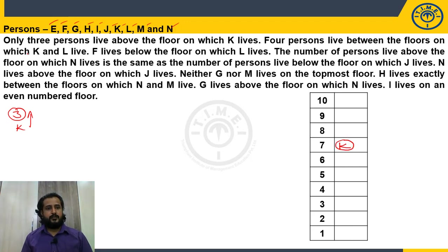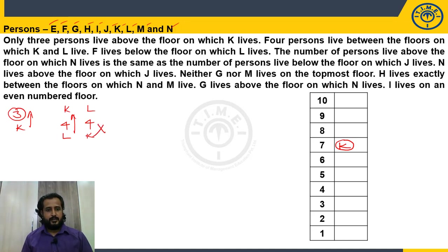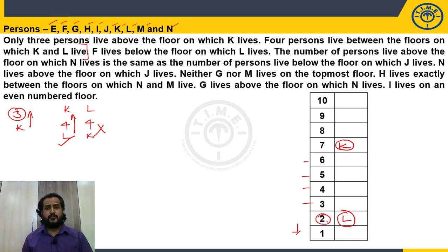Second clue: 4 persons live between the floors on which K and L live, meaning 4 floors between K and L. K is on the 7th floor. Can L be above K with 4 floors between them? No, that's not possible. So L must be below K — counting 4 floors down from K, L is on the 2nd floor. Third clue: F lives below the floor on which L lives. L is on the 2nd floor, so the only floor below is the 1st floor. Therefore F is on the 1st floor.